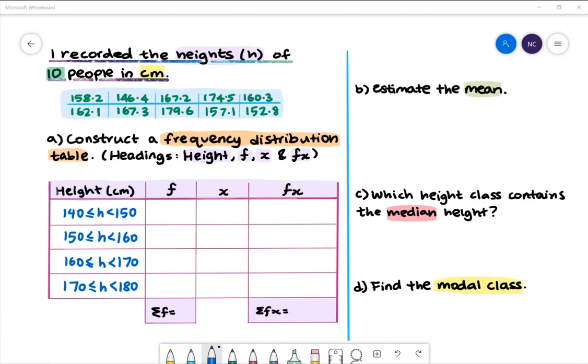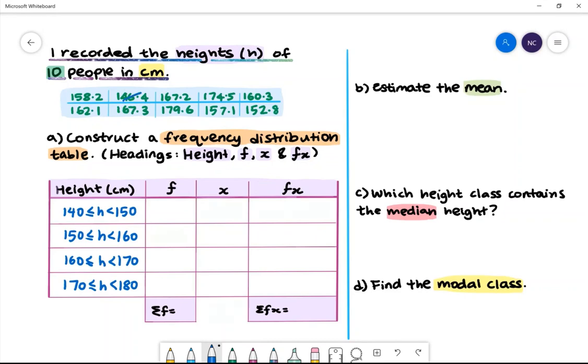To complete the frequency column, we need to count the number of people in each height class. There is one person in the first height class.